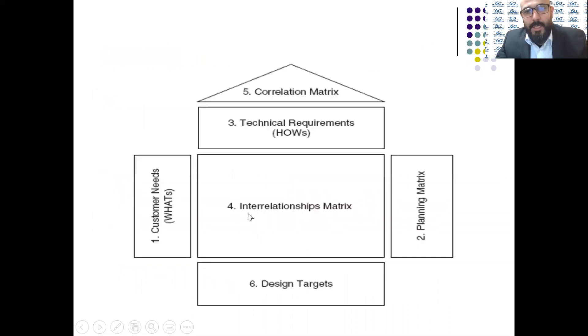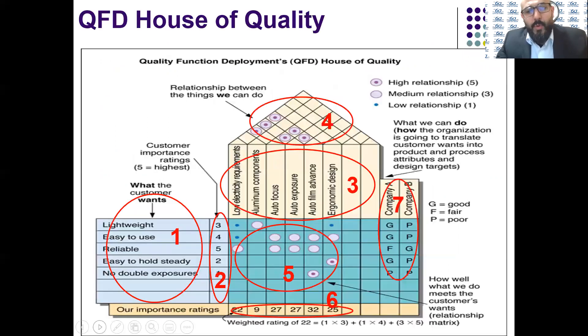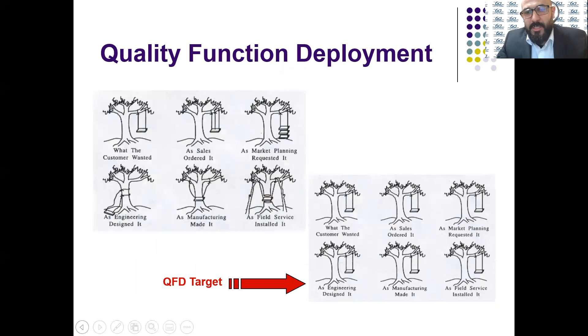It is called the house of quality because it looks like a house. As you see here in this chart, you will see an attic — that's the roof of the house — and you will see different rooms. A cross-functional team is important because we need everyone to be on the same page.